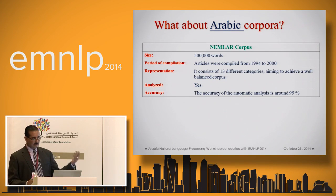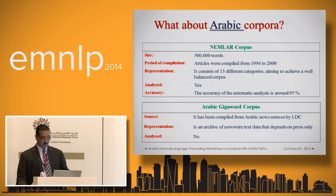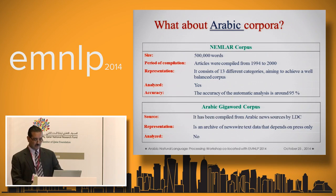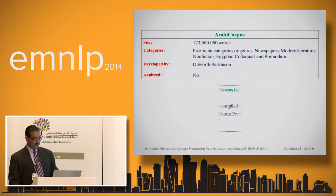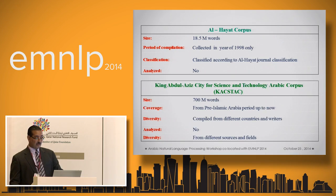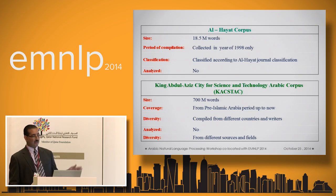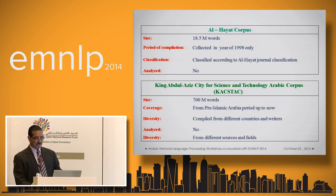What about Arabic corpora? Maybe we know that few resources are available for Arabic. There's the Nemlar corpus, with about 500 million data points, available for commercial reasons. Arabic Gigaword is also available commercially. The corpus of Dilworth Parkinson, the Arabic corpus, is 173 million words but it's not analyzed. Arabic Newswire is almost entirely from news. The King Abdulaziz City for Science and Technology started to build a corpus of 700 million words, starting from the pre-Islamic Arabic period till now, combined from different resources and writers, but it's not analyzed so far.